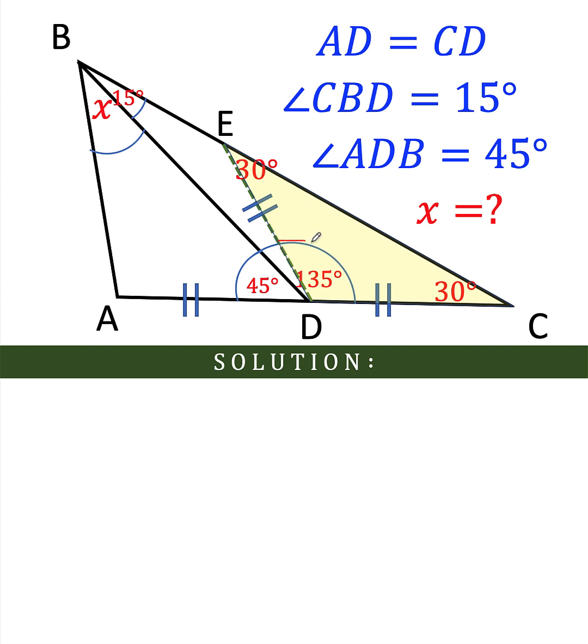This means that this angle here, angle EDC, must be 120 degrees, so that 30 plus 120 plus 30 is equal to 180, which is the sum of the three interior angles of any triangle.